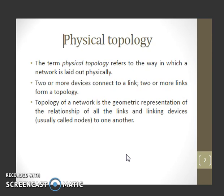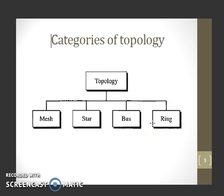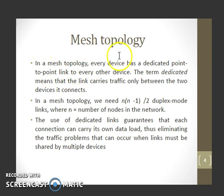The term physical topology refers to the way in which a network is laid out physically. Two or more devices connect to a link; two or more links form a topology. The topology of a network is a geometric representation of the relationship of all the links and linking devices to one another. These linking devices are called nodes. We can categorize the topology as mesh, star, bus, or ring.